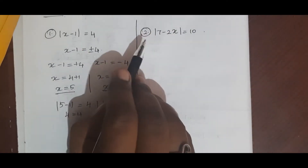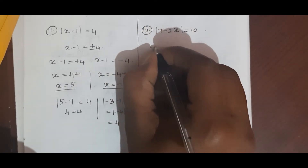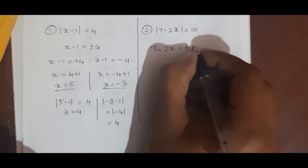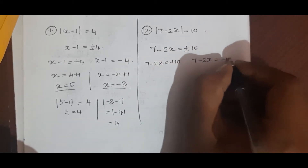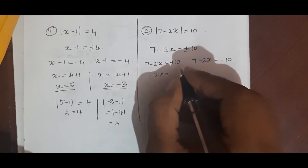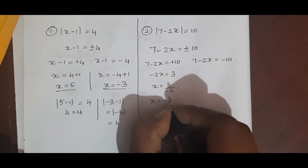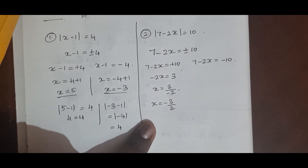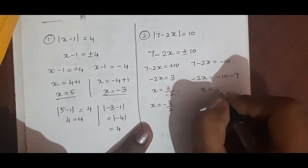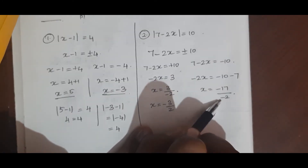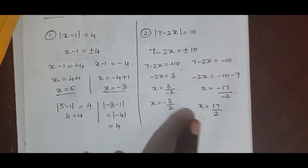For another question, modulus of 7 minus 2x equal to 10, we write 7 minus 2x equal to plus or minus 10. Splitting: for 7 minus 2x equal to plus 10, we get minus 2x equal to 3, so x equal to minus 3 by 2. For 7 minus 2x equal to minus 10, we get minus 2x equal to minus 17, and x equal to 17 by 2.